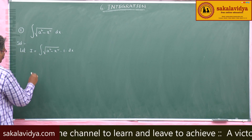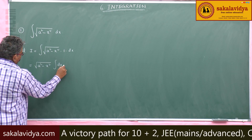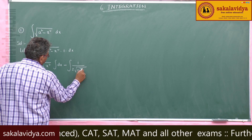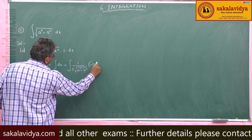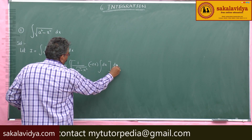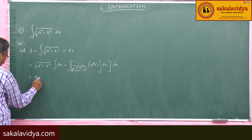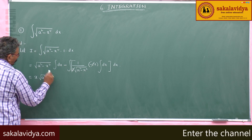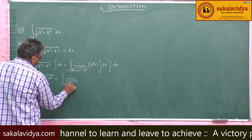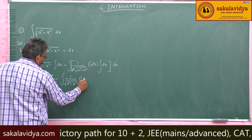Take √(a²−x²) as the first function. So, √(a²−x²)·∫dx minus the derivative of √(a²−x²), which is 1/(2√(a²−x²))·(−2x), times ∫dx, all dx. The 2 and 2 get cancelled. We have x·√(a²−x²) minus (x²/√(a²−x²))dx.